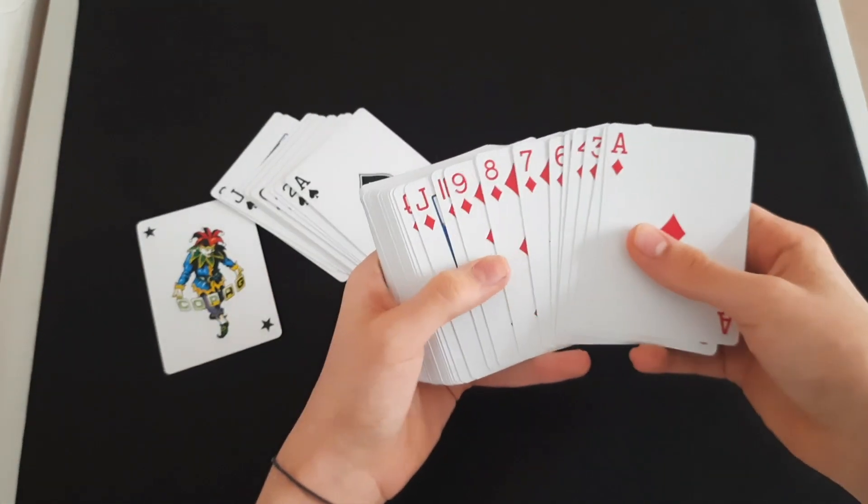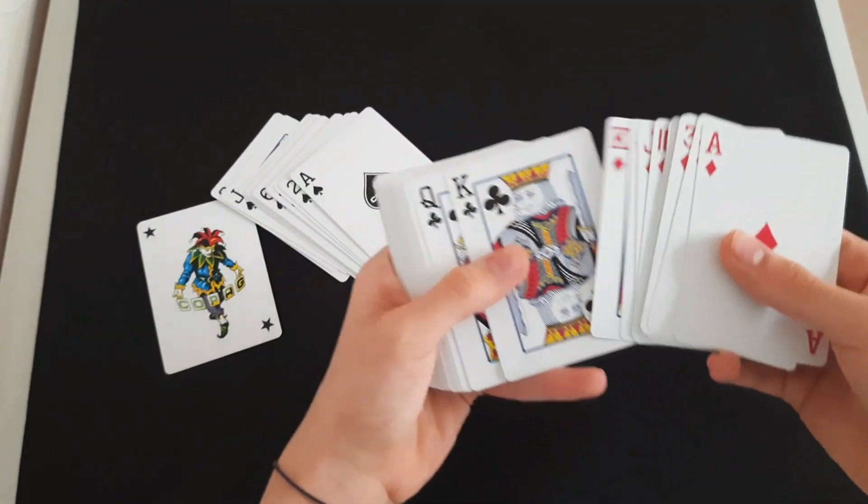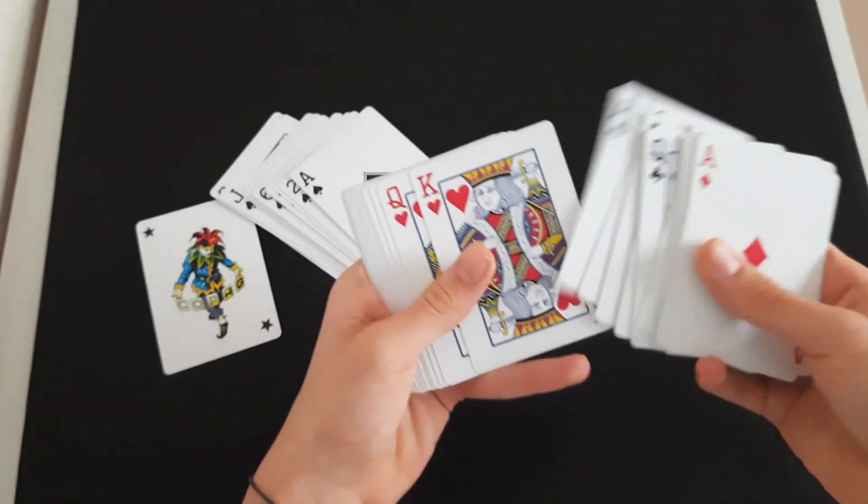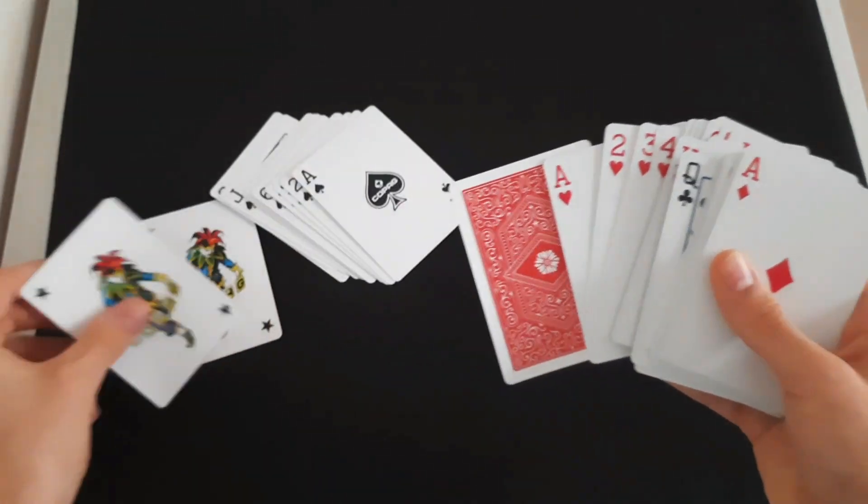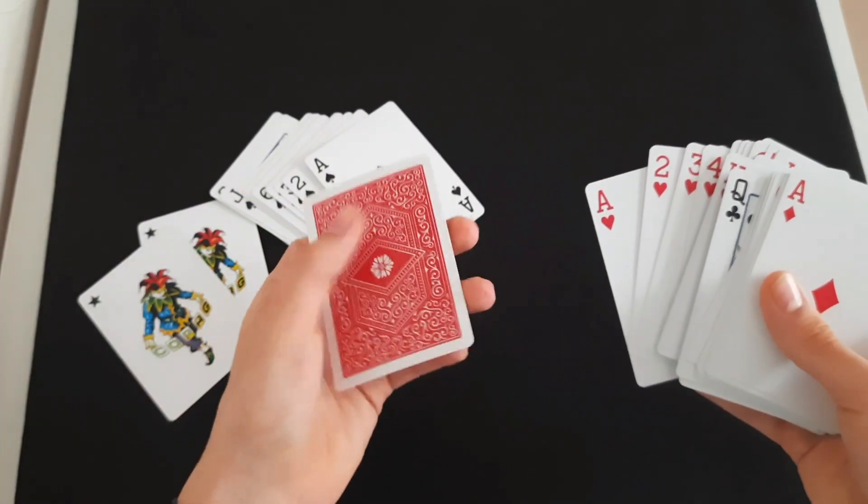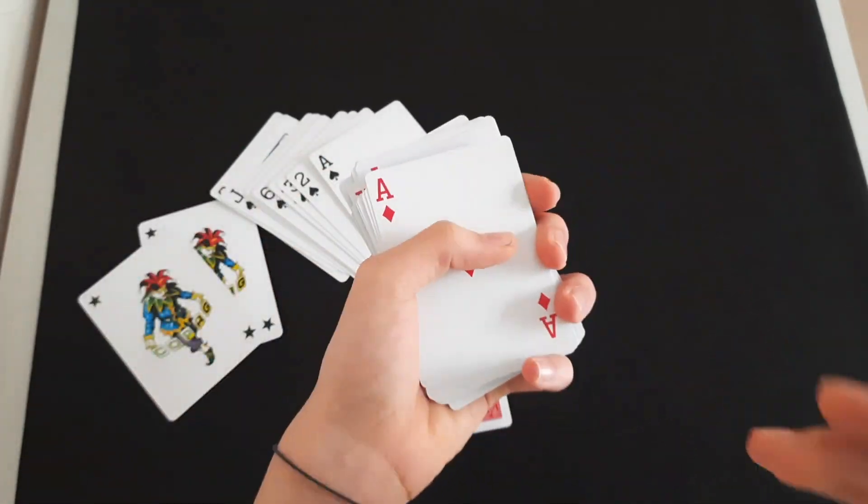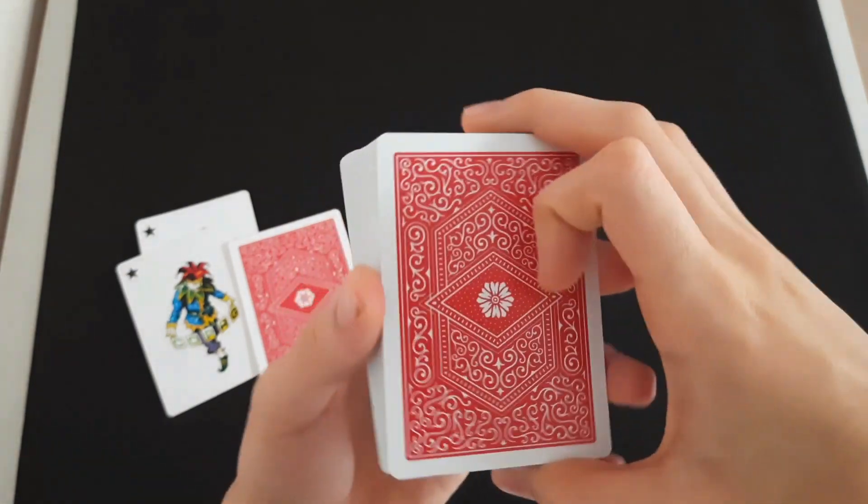Here are the spades, the diamonds, the clubs, and finally the hearts. We get another joker and a double backer, nice! I really like that. Here's the back design—I really like it, it's simplistic and I absolutely love it.